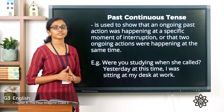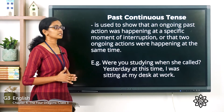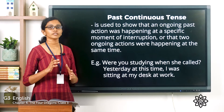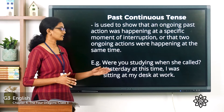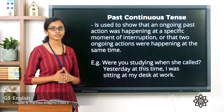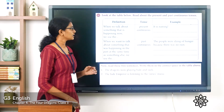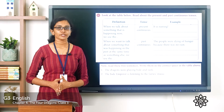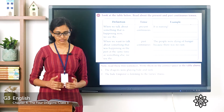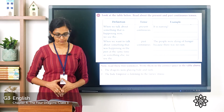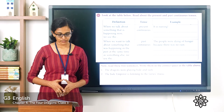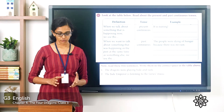'Yesterday at this time I was sitting at my desk at work' - here there is a reference to a point of action yesterday, and you can consider that point in time as the interruption. I hope you are clear with the concept of past continuous tense. Now please open your English reader and turn to page number 60. You can see the grammar session there, and below that there is a table. Look at the table and read about the present and past continuous tense.